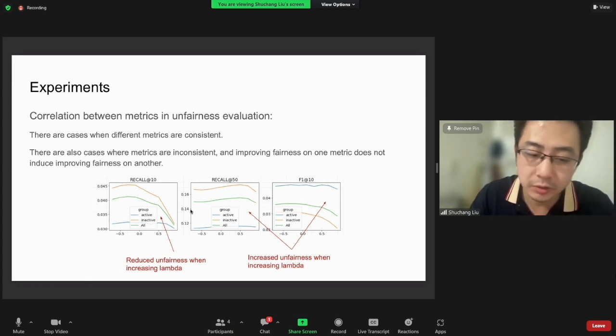In this sense, we keep skeptical on whether there exists a universal metric that controls fairness with all other metrics.